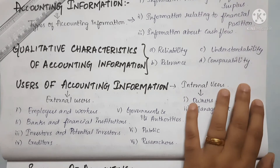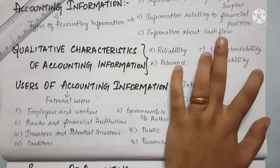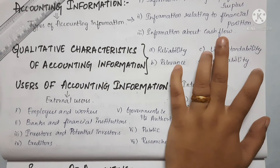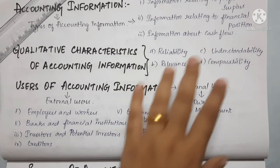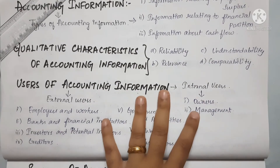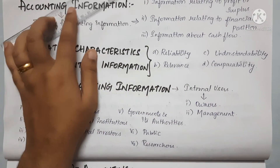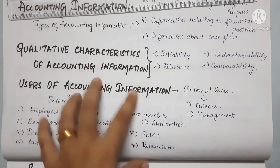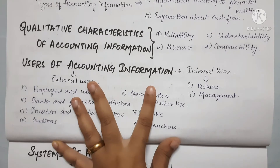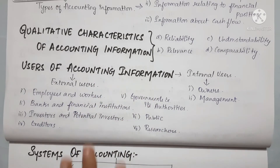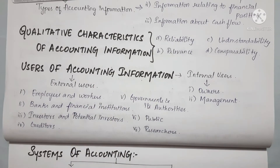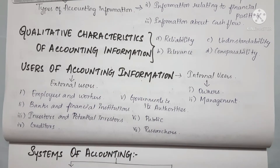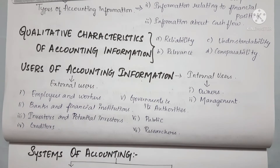The balance sheet also includes cash balance, bank balance, and liabilities. Next is cash flow — the inflow and outflow of cash during a specified period. Within the accounting period, there are cash flows and fund flows. So that is accounting information — these are the three important types.